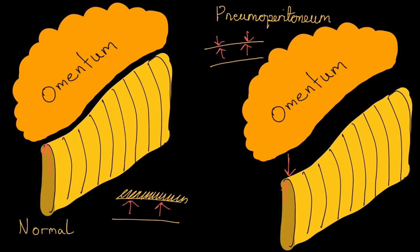In pneumoperitoneum, gas-filled loops of bowel are separated from the omentum and adjacent loops of bowel by free intra-abdominal gas. On plain film, this is represented by an interface on both sides of the bowel wall.